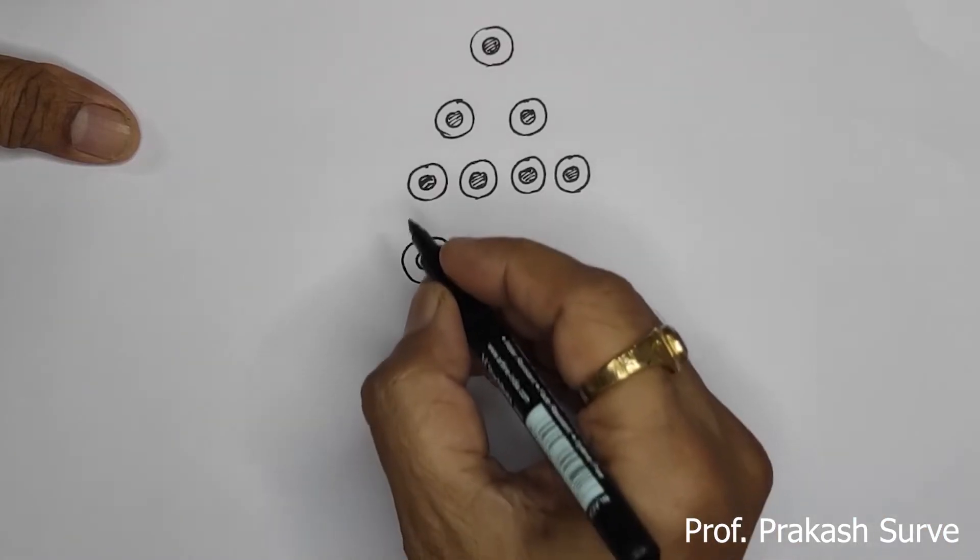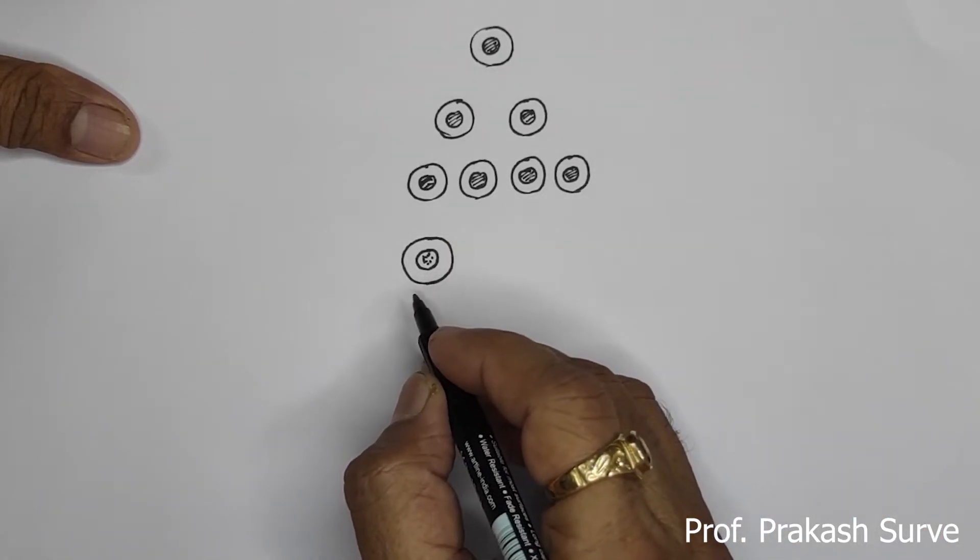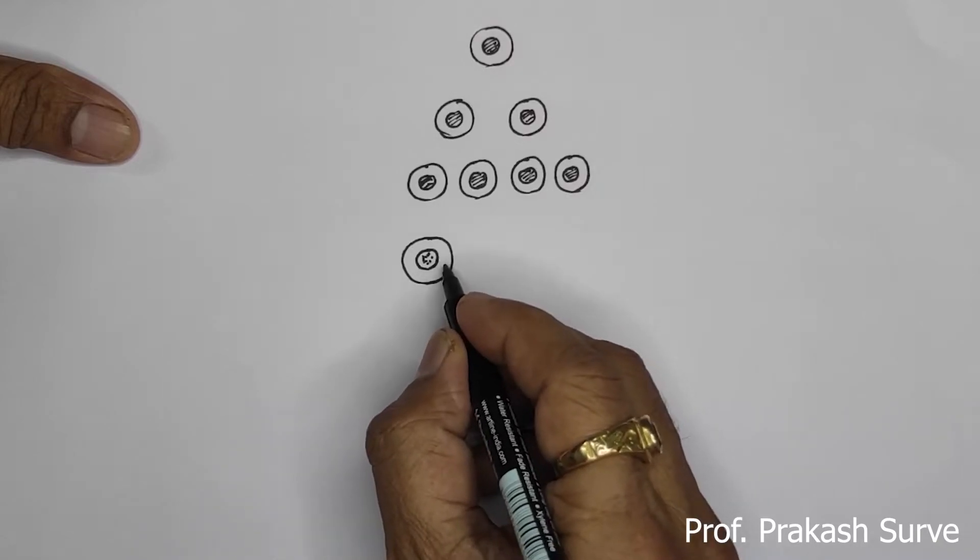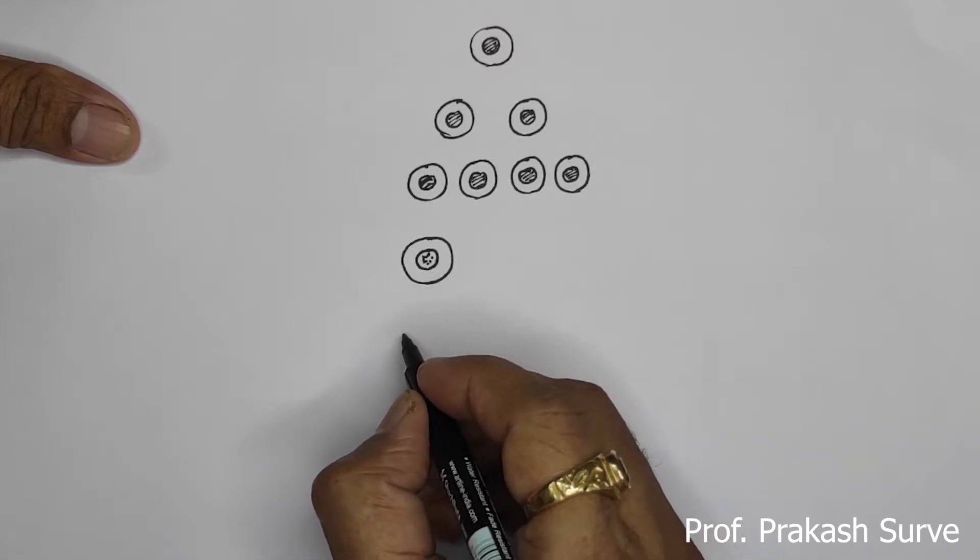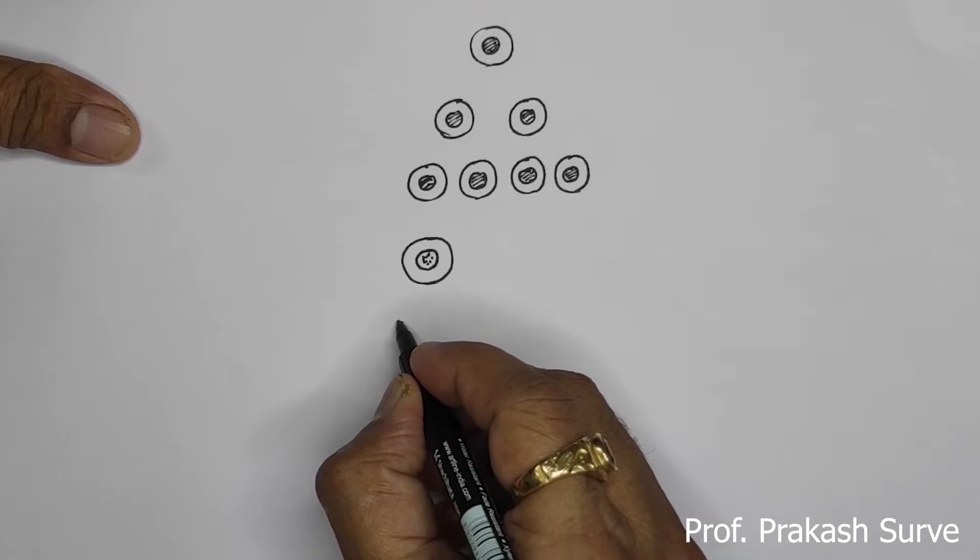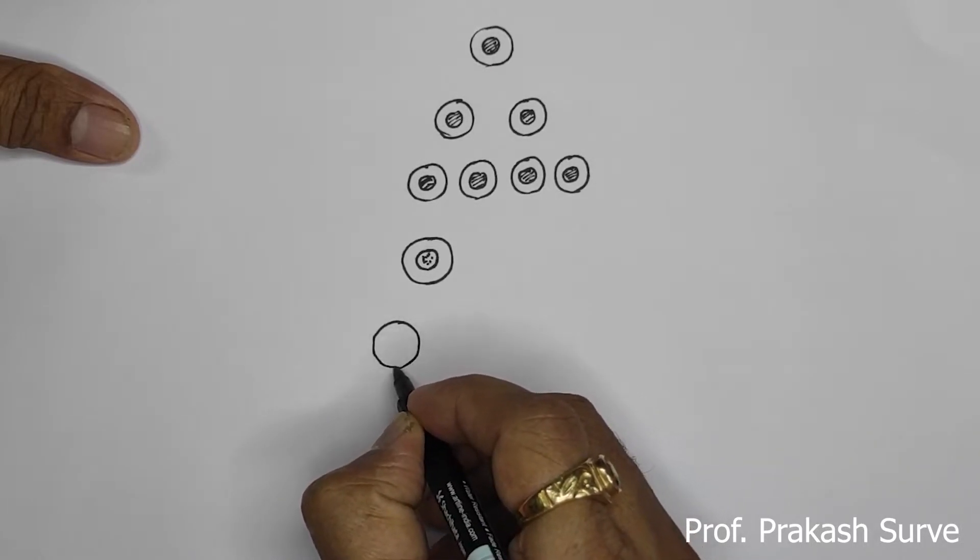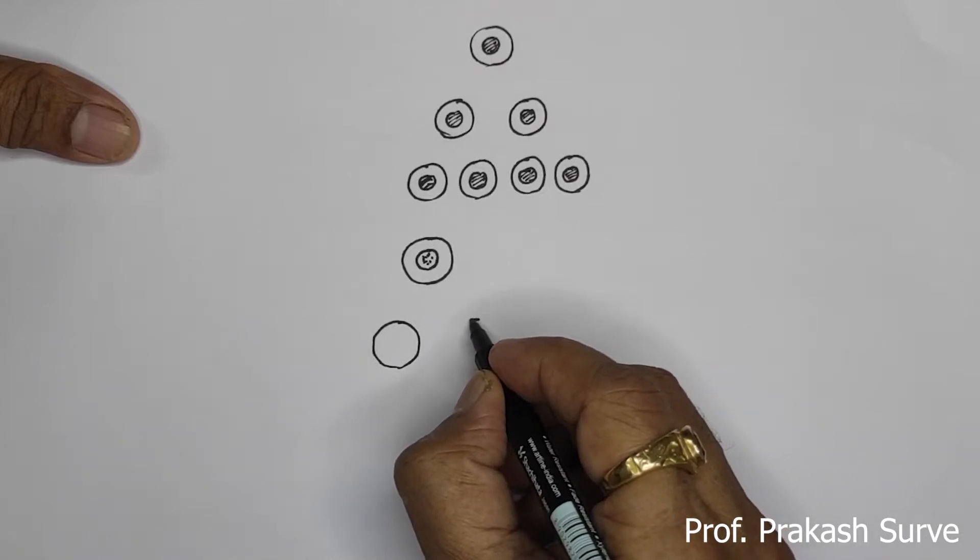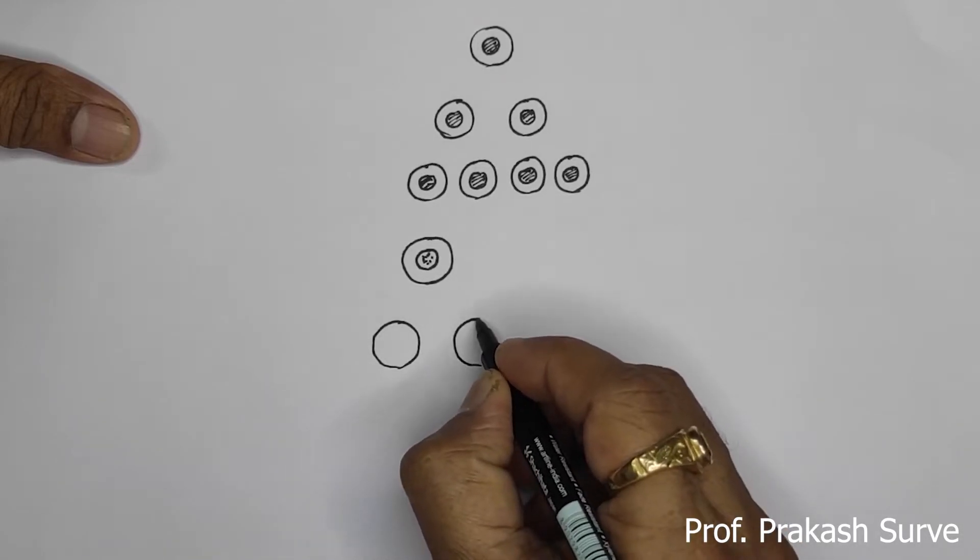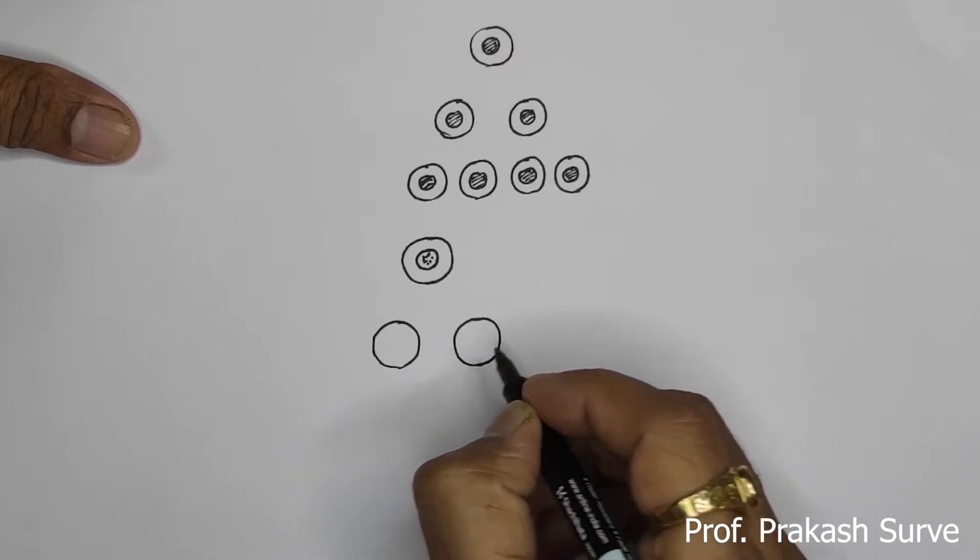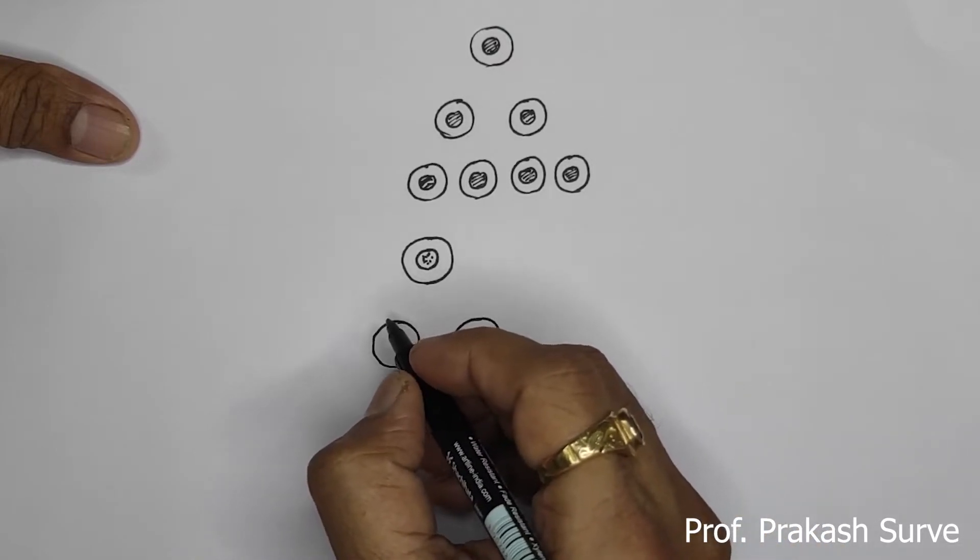Now from here, meiosis one is taking place. So from this diploid cell, we get two haploid cells, which are the secondary spermatocytes.